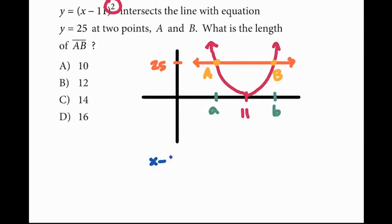So I have x minus 11 quantity squared, and I have to set this equal to 25. Then it's going to find two values. The values are A and B, in this case.